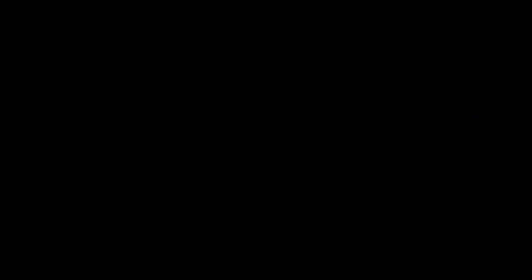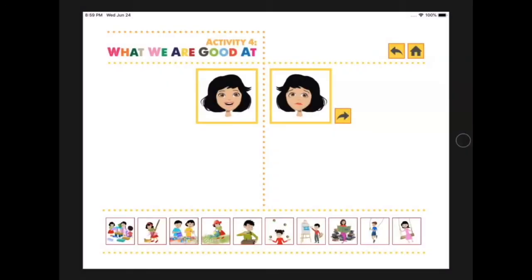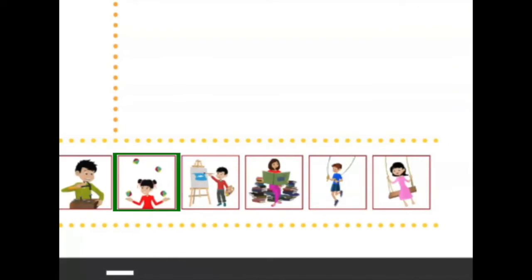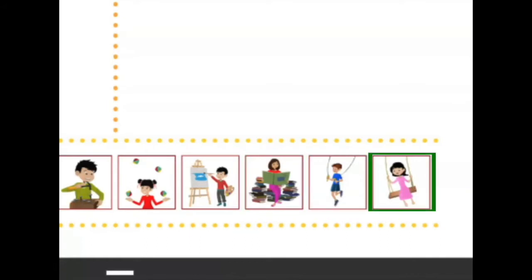Let's move on to our next one. Now let's look at the pictures of activities. Here we have building blocks, playing house or cleaning, arts, gardening, crafts, juggling, painting, reading, jumping rope, and swinging.